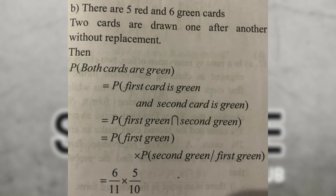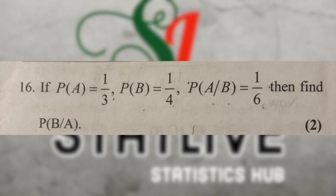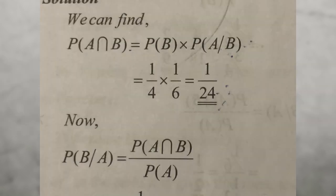Next problem: P of A equals one by three, P of B equals one by four, and P of A given B equals one by six. Find P of B given A. Using the formula, P of A and B equals P of B multiplied by P of A given B, giving P of A intersection B equals one by 24.